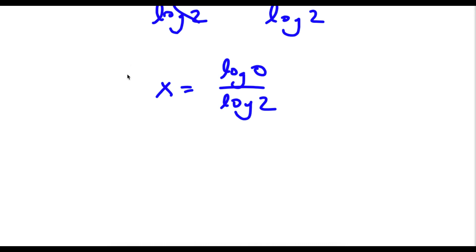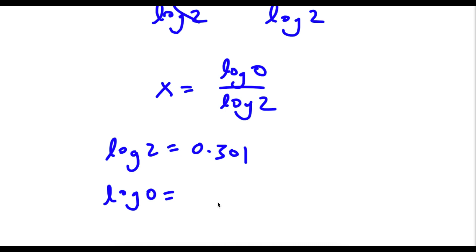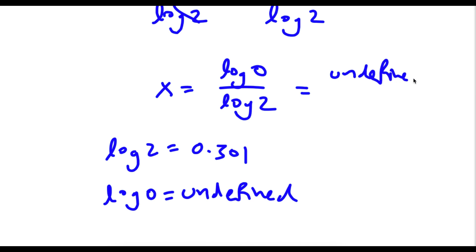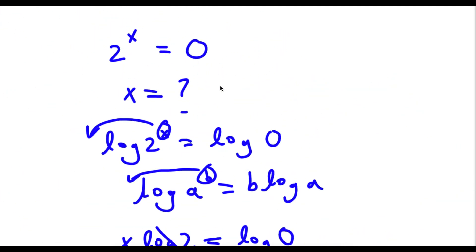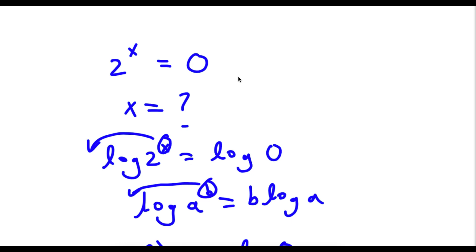Now log 2 is equal to 0.301, and log 0 is actually undefined. So now I have undefined over 0.301, and this means that our answer is undefined. Because you can't divide undefined by 0.301 — undefined is already undefined. This means 2 to the power of x equals 0 is undefined, which actually makes sense because you can't take anything to the power of something and make it equal 0.